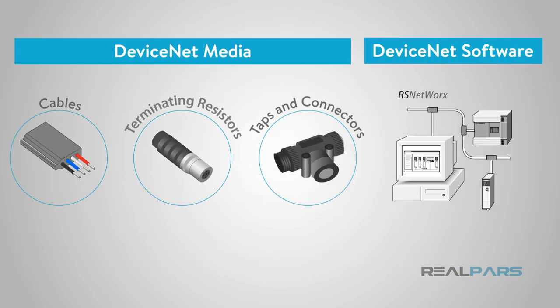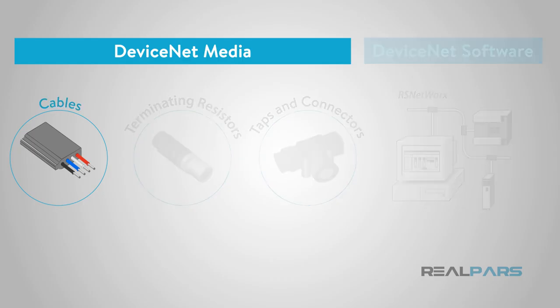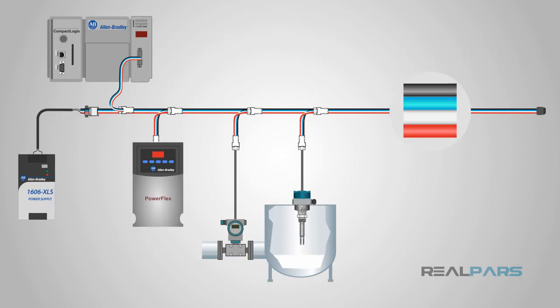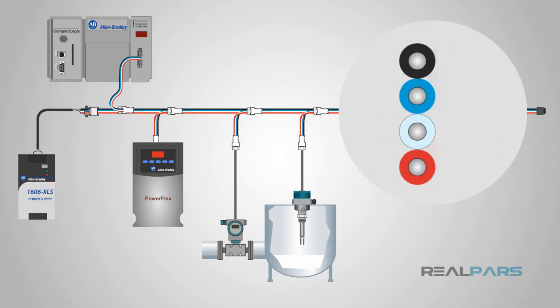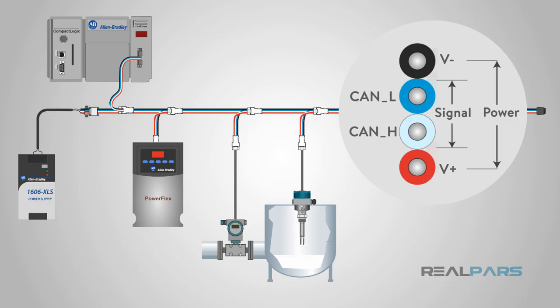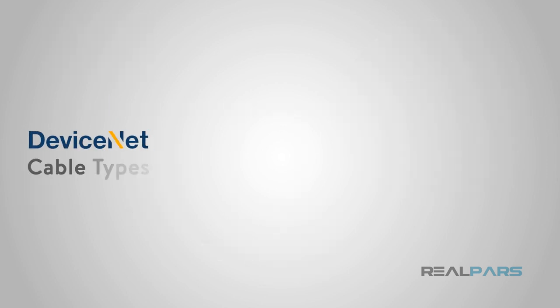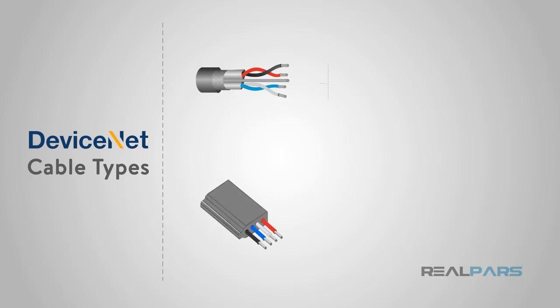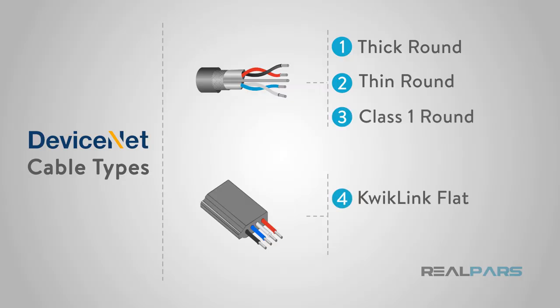Now let's look at the physical part of DeviceNet we can put our hands on. The genius behind DeviceNet is that it joined the power and the signal into one cable, saving money and reducing the need for multiple cables which utilize more space. There are five types of cable — three that are round and two that are flat: thick round, thin round, class 1 round, quick link flat, and quick link light flat.